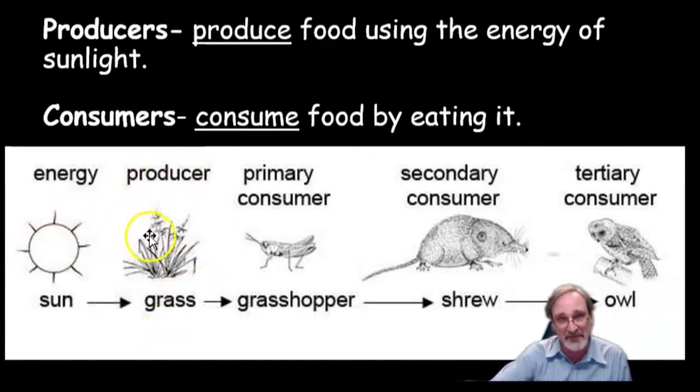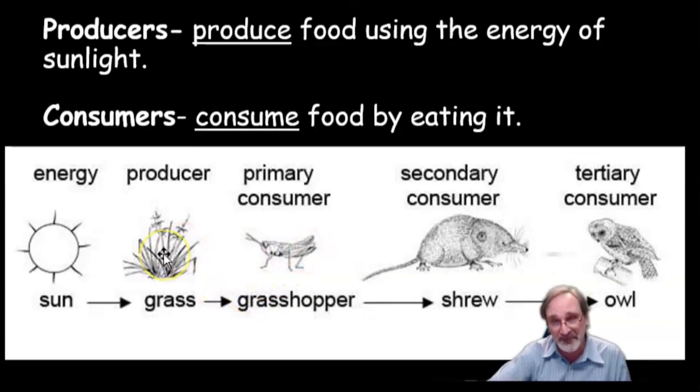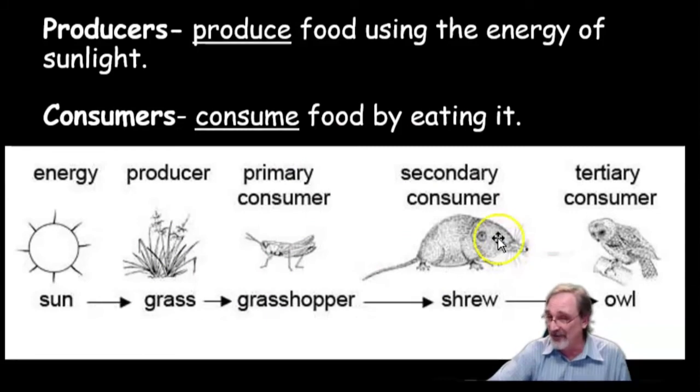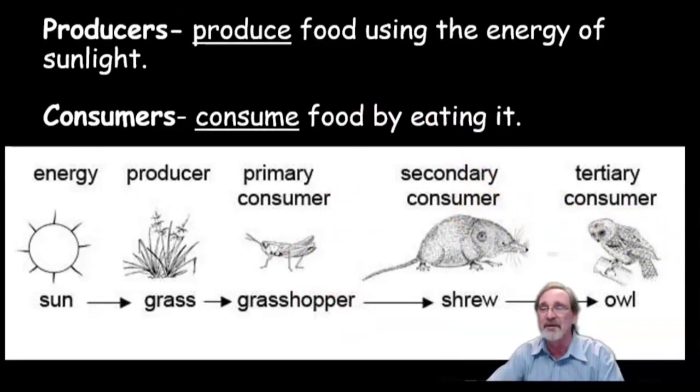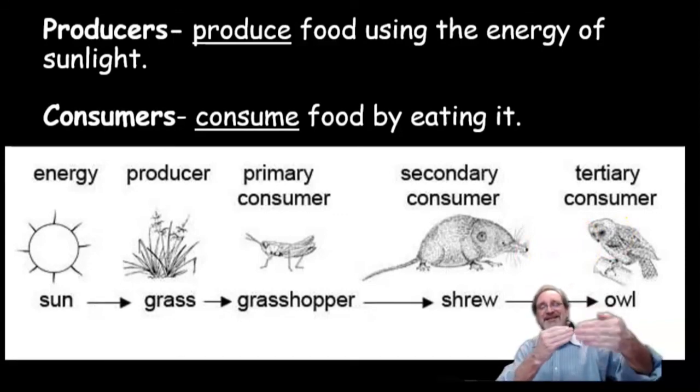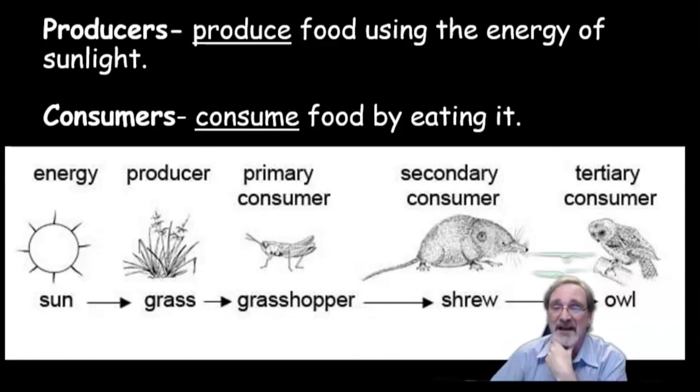Then the primary consumer - primary means first - eats the plant, and that's also called an herbivore. Then the secondary consumer is a carnivore, means it eats meat. Carne means meat, so it eats another animal. This is the primary consumer, first order, and here's the secondary consumer. Then a tertiary consumer, which is third order, would eat the shrew. You can have these steps in the food chain, which we're going to get later on in the lesson - we'll get why that's kind of important.